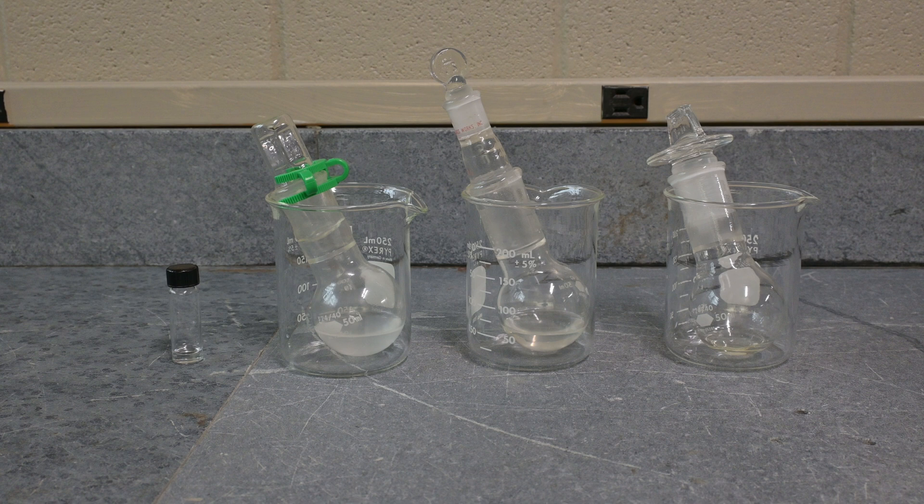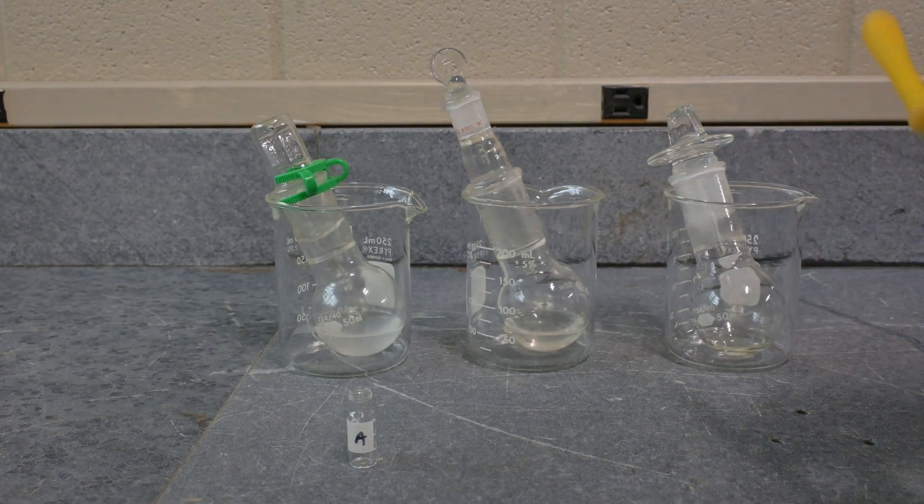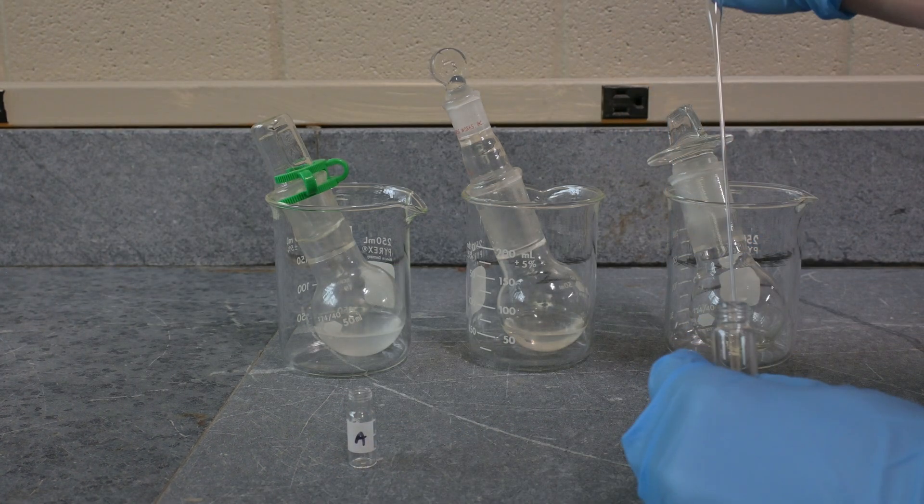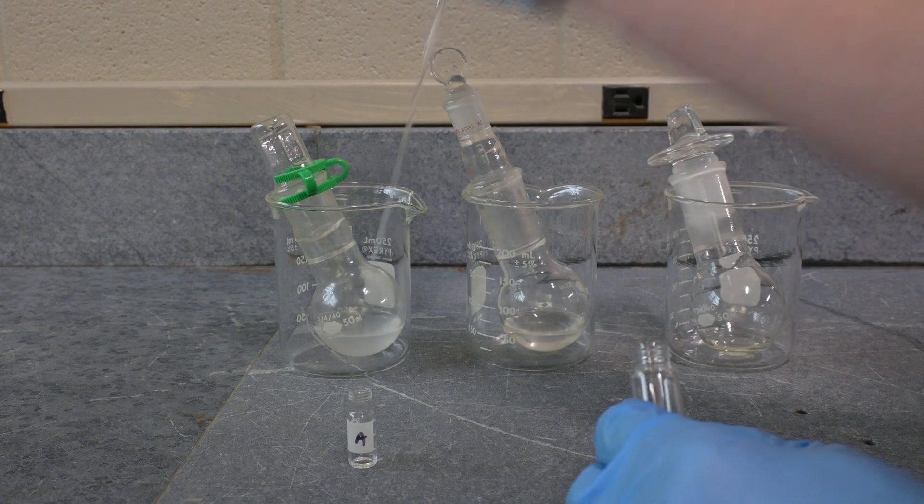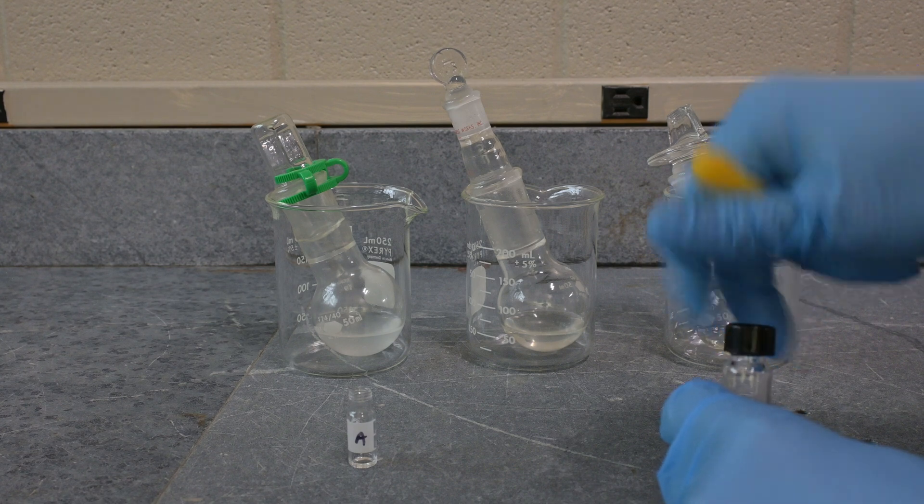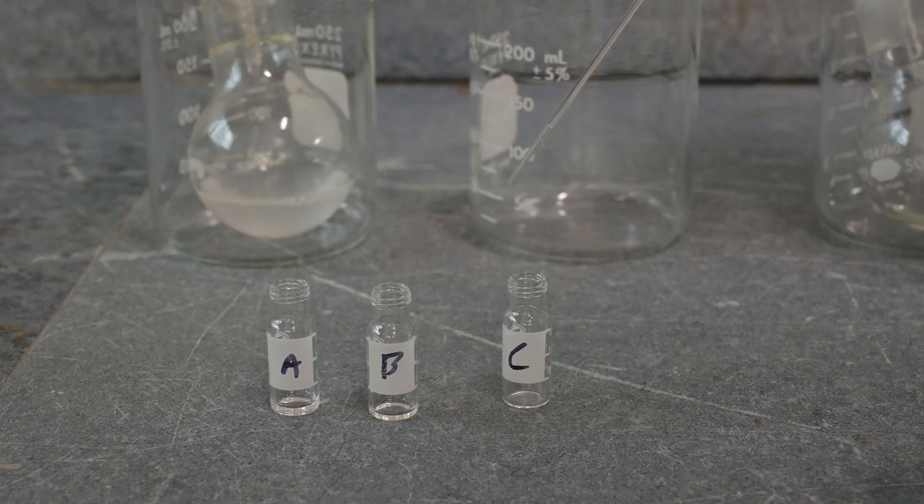I prepared four GC vials. Labeled them according to the order in which the distillates were collected. I took a small sample from each collection flask and placed it into the vial. It only takes a very small amount for a sample to be analyzed. If you can see the analyte, you have enough.